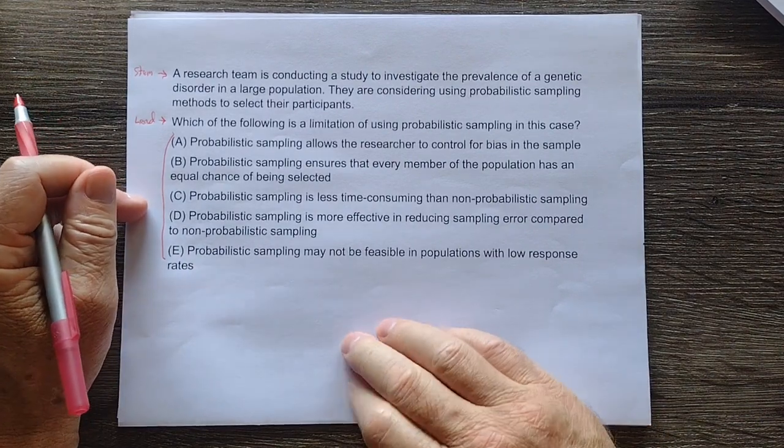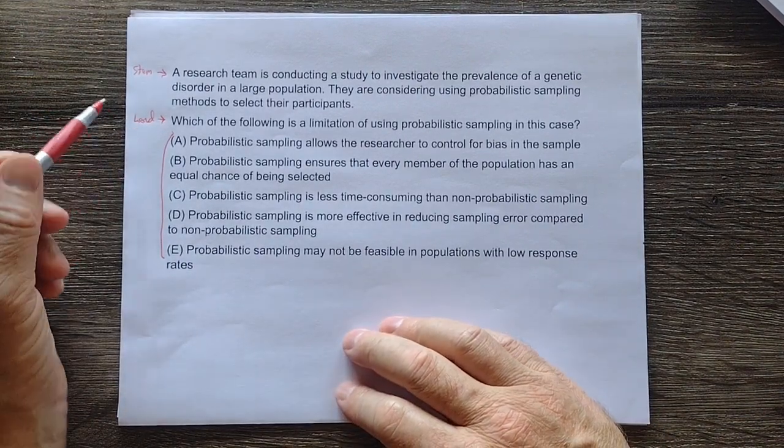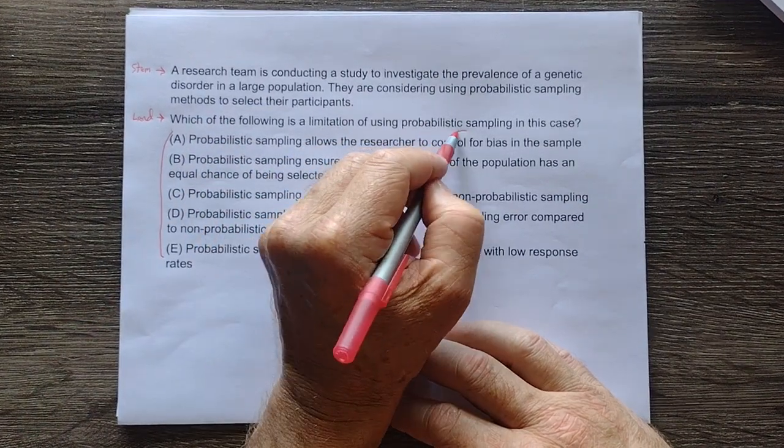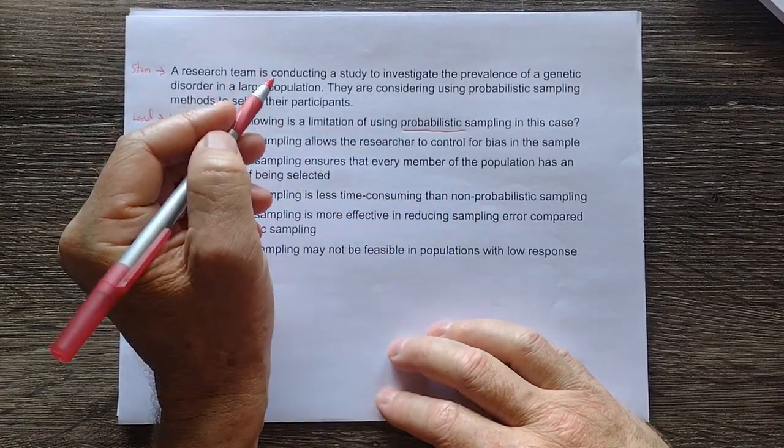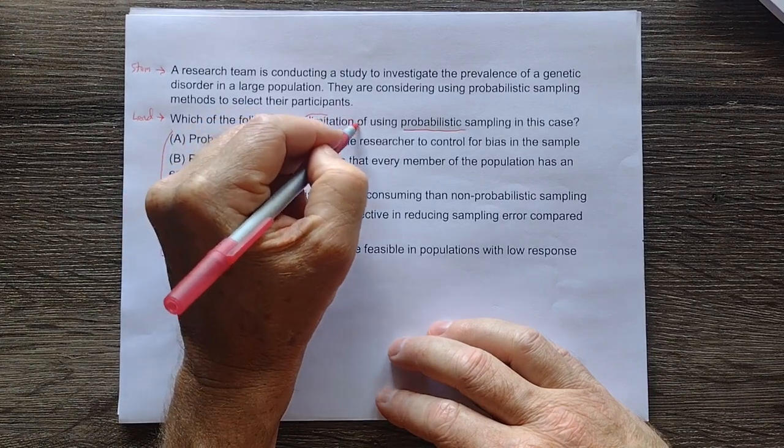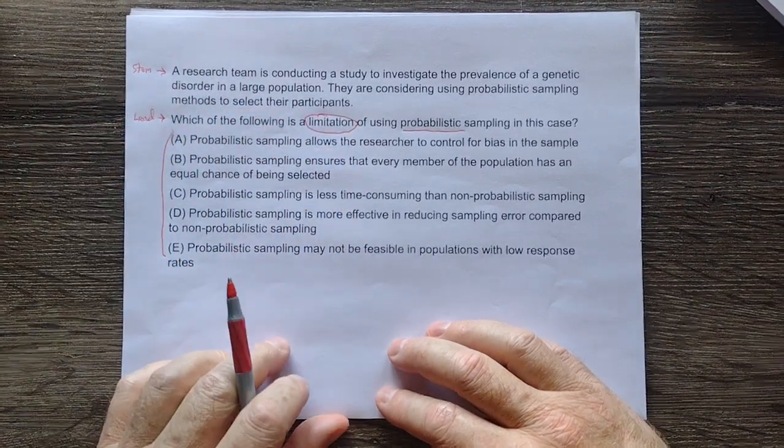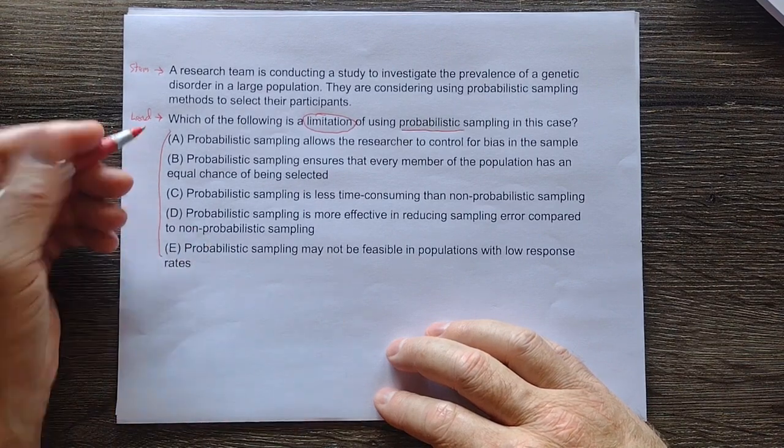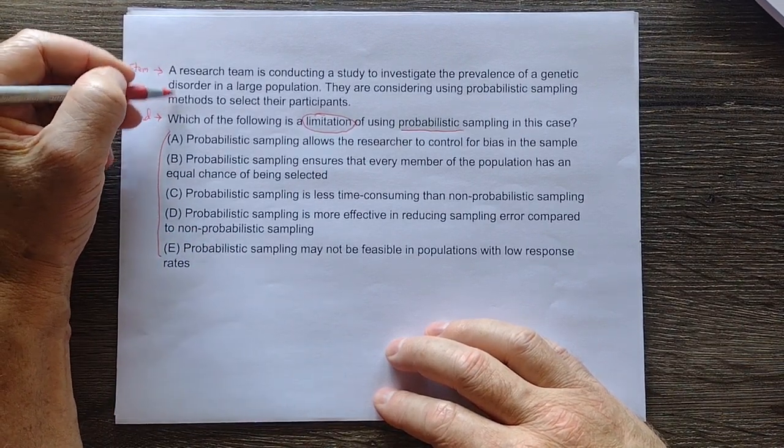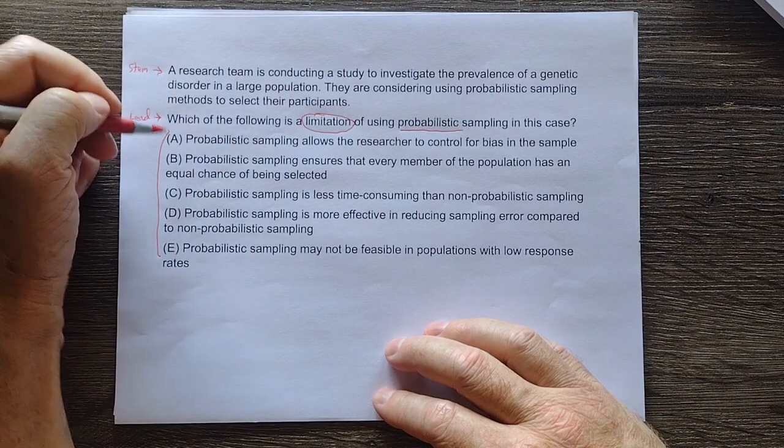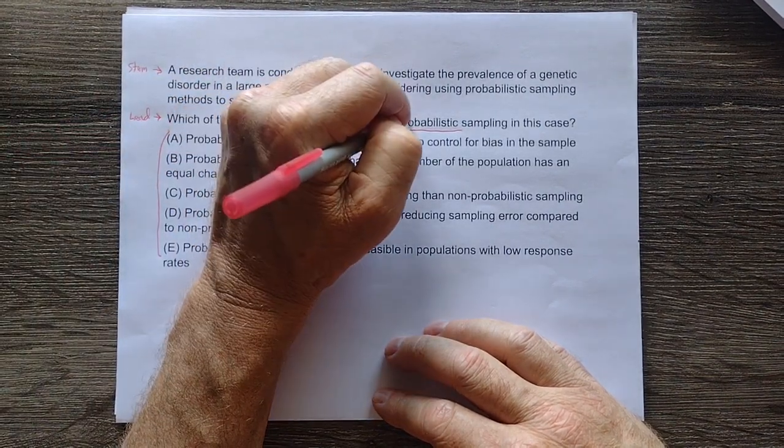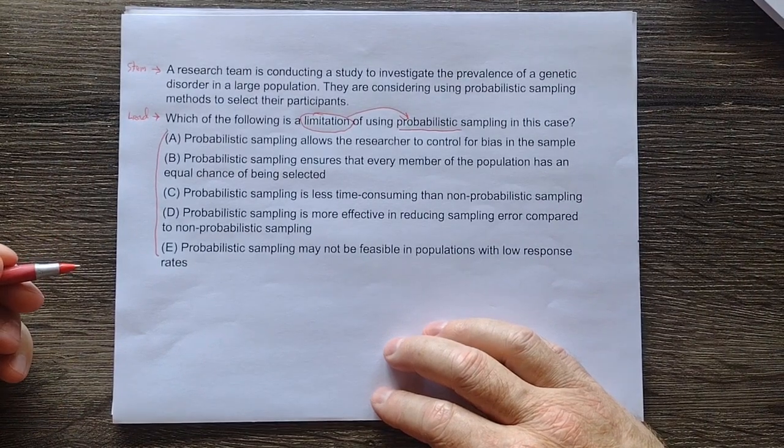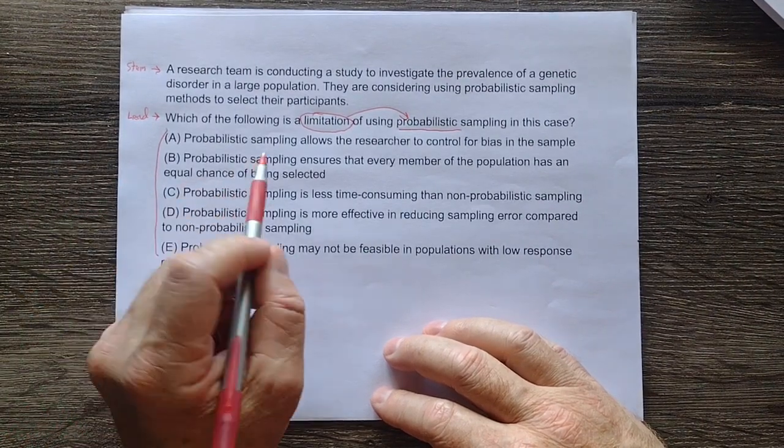Great. So let's take a look at the lead-in. Which of the following is a limitation of probabilistic sampling? So we're looking at probabilistic sampling and we want to know about the limitations. Can we just go to the answer choices without wasting time on reading this? Yeah, it's possible because we're really talking about limitations of probabilistic, and we've done our homework so we know some of the limitations. So let's just dive right in.